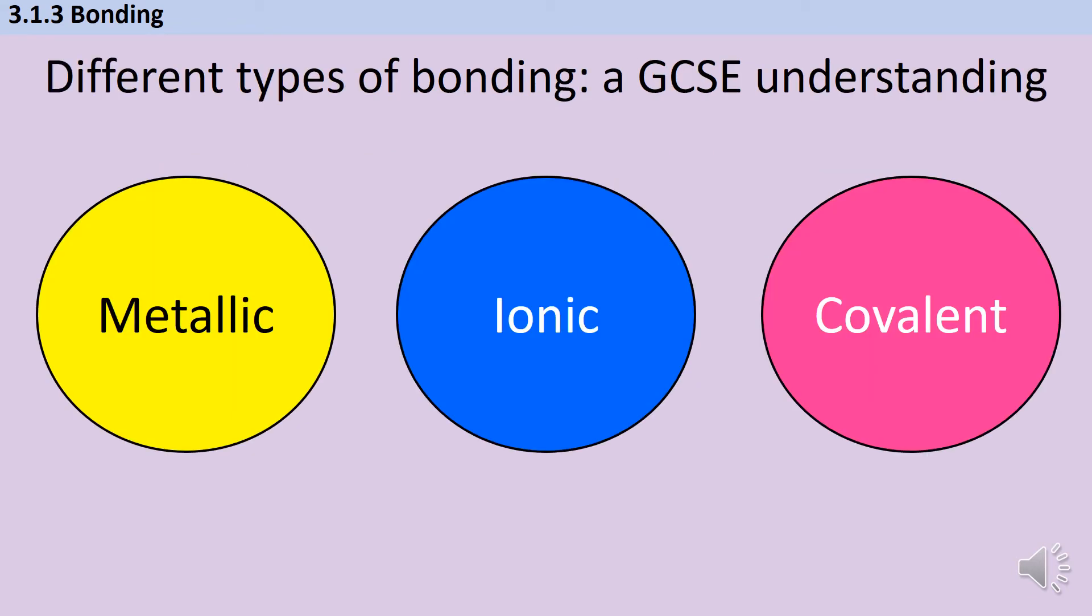The other thing that I think is really useful to be clear on before we start talking about bonding in an A-level chemistry context is that our understanding of bonding at GCSE was really quite simplified. We talked about there being three types of bonding: metallic bonding, which would happen between metal atoms; ionic bonding, which would happen between a metal and a non-metal; and covalent bonding, which would happen between two non-metal atoms.